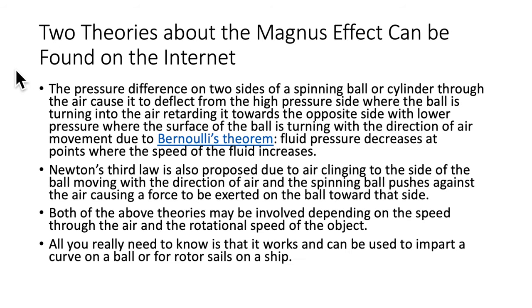There are two theories about Magnus effect you can find on the internet. Pressure difference on two sides of the spinning ball or cylinder through the air causes it to deflect from the high pressure side where the ball is turning into the air towards the opposite side with lower pressure where the surface of the ball is turning with the direction of the air movement. Due to Bernoulli's theorem, basically fluid pressure decreases at points where the speed of the fluid increases.